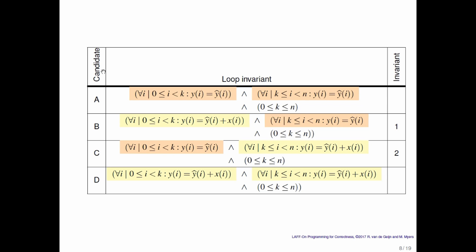Candidate C says that the first k entries have not yet been updated, but the rest of the entries have been updated. Again, that seems like the kind of thing that represents partial progress. And then the final candidate, D, says that all entries have already been updated.